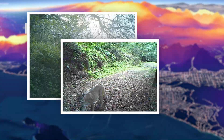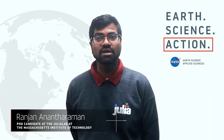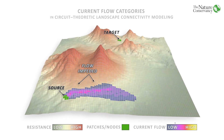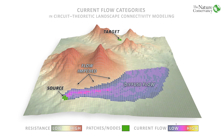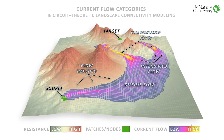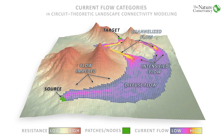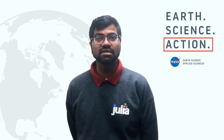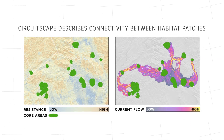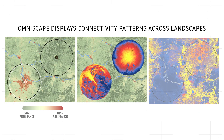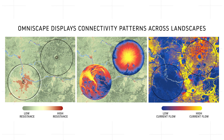Both Circuitscape and Omniscape model the landscape as a large network or graph where each pixel is a node and the edges are weighted by landscape features such as forests, roads, and cities that facilitate or block animal movement. The animals themselves are modeled as random walkers across this graph. In effect, we can now simplify their movement as electrical currents moving across a large electrical circuit and use current as a proxy for movement probabilities. NASA Earth observation datasets are essential for connectivity modeling because they provide consistent information on the physical, environmental, and climatic factors that influence animal movement.